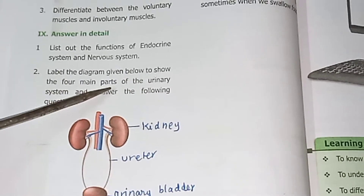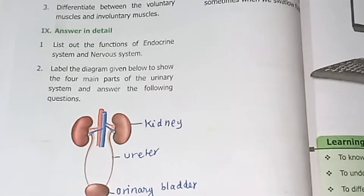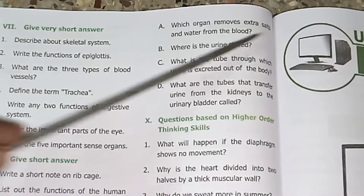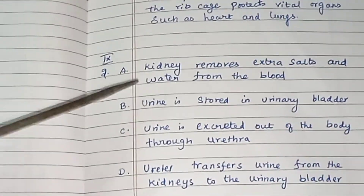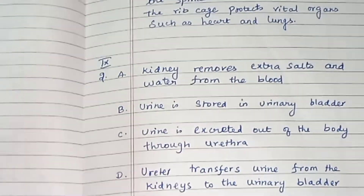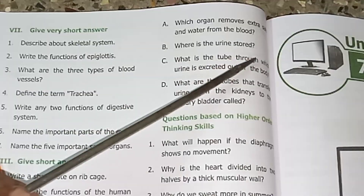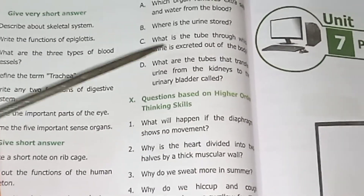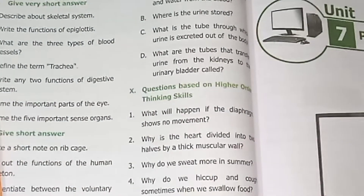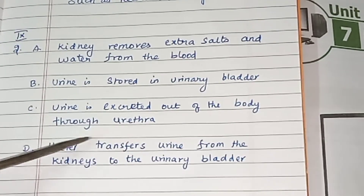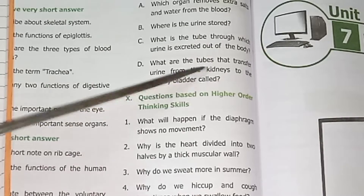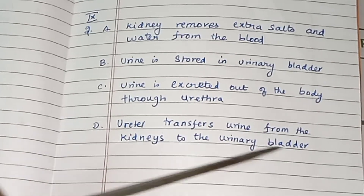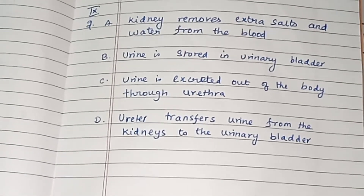Label the diagram showing the four main parts of the urinary system: kidney, ureter, urinary bladder, urethra. Which organ removes the extra salt and water from the blood? The kidney removes the extra salt and water from the blood. Where is the urine stored? Urine is stored in the urinary bladder. What is the tube through which urine is excreted out of the body? Urine is excreted out of the body through the urethra. What are the tubes that transfer urine from the kidney to the urinary bladder called? Ureter transfers urine from the kidneys to the urinary bladder.